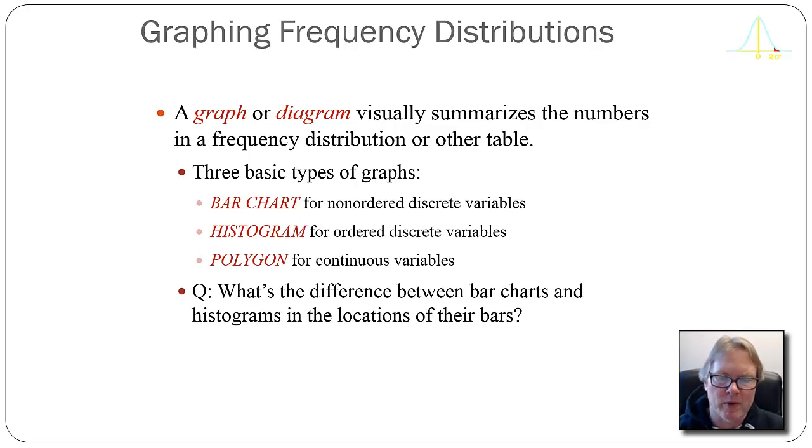There is a subtle difference between bar charts and histograms. Basically the difference is whether the bars are pushed together and touch or whether there's a gap between them. If there's a gap between them, that implies that the underlying variable is a discrete non-orderable measure.